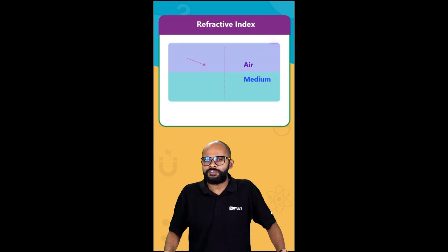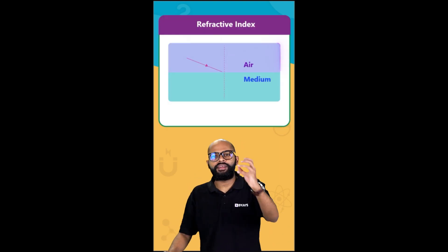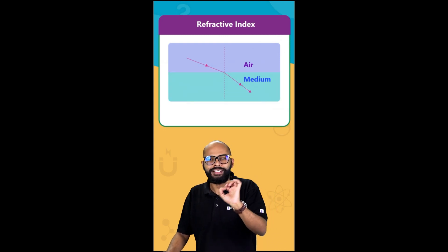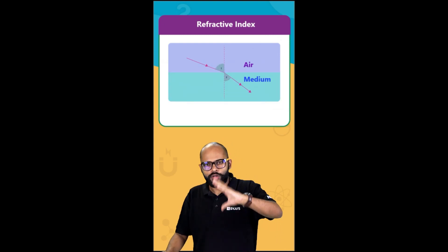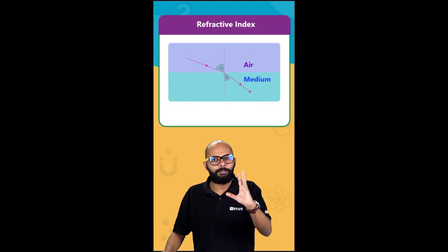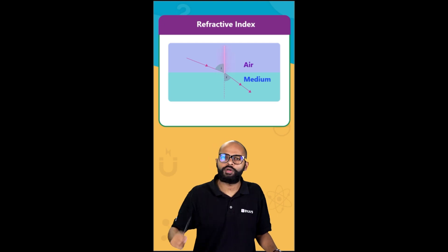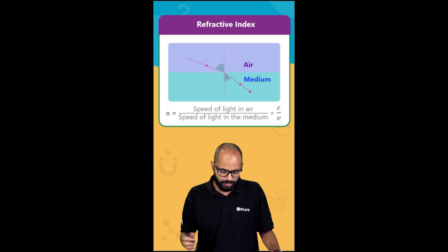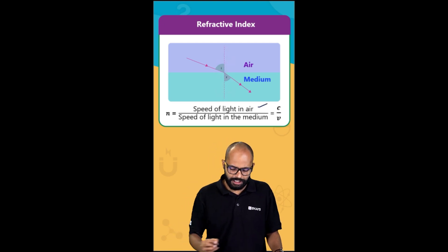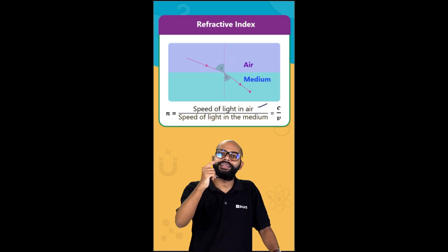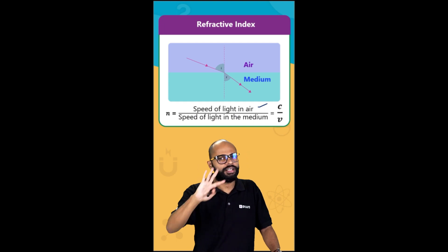When light travels from an optically rarer to a denser medium, its speed decreases and consequently it bends — specifically, it bends towards the normal. The refractive index is defined as the speed of light in air divided by the speed of light in that medium, that is c upon v.